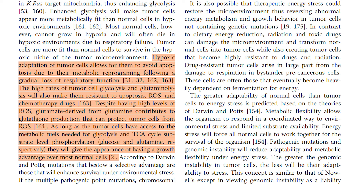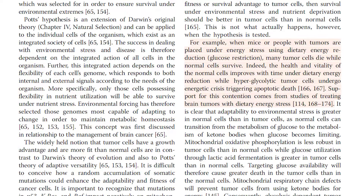Despite having high levels of ROS, glutamate derived from glutamine contributes to glutathione production that can protect tumor cells from ROS. As long as the tumor cells have access to the metabolic fuels needed for glycolysis and TCA cycle substrate-level phosphorylation — glucose and glutamine — they will give the appearance of having a growth advantage over most normal cells. When mice or people with tumors are placed under energy stress using dietary energy reduction and glucose restriction, many tumor cells die, while normal cells survive. Indeed, the health and vitality of the normal cells improves with time under dietary energy reduction, while hyperglycolytic tumor cells undergo energetic crisis triggering apoptotic death.